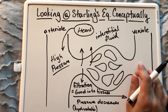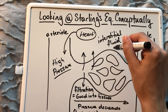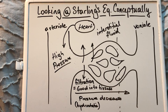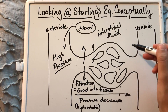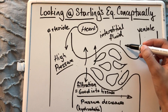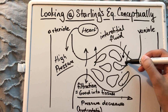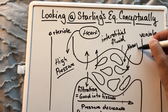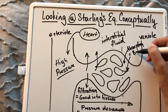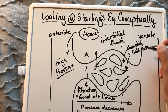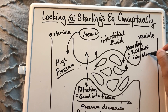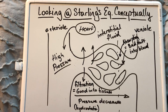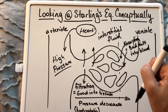As you move over to the venule side, the pressure is decreasing. At some point, the hydrostatic pressure and the osmotic pressure are going to equal each other. And then after that point, the osmotic pressure is going to be greater than the hydrostatic pressure, which will result in pressure inward — which is going to result in absorption. This means bad stuff going into blood, things like CO2 or urea — things that need to be discarded from the cells — and then this gets carried to the venule.